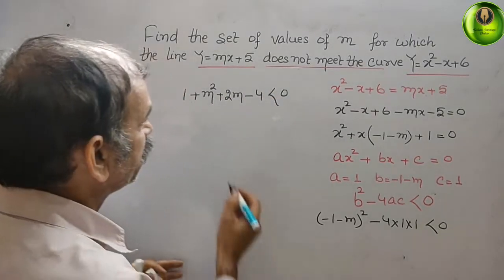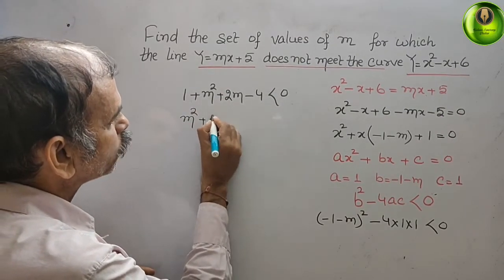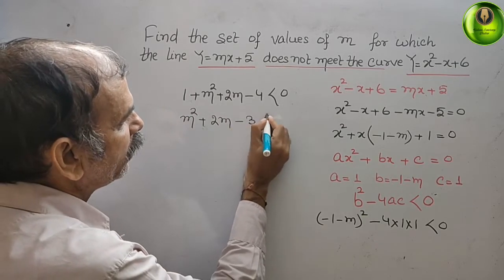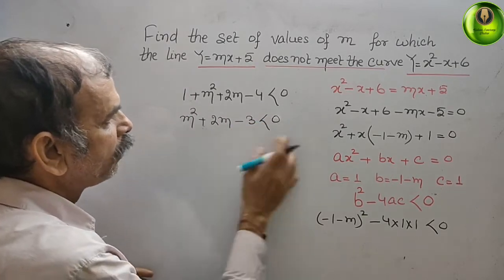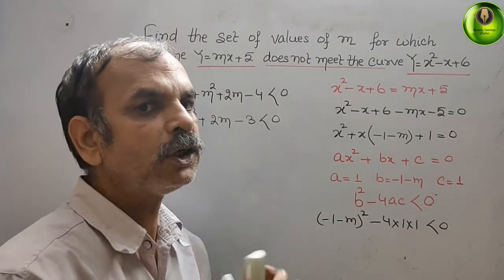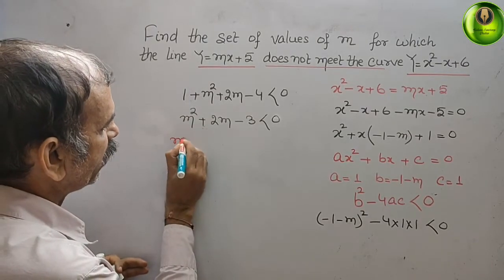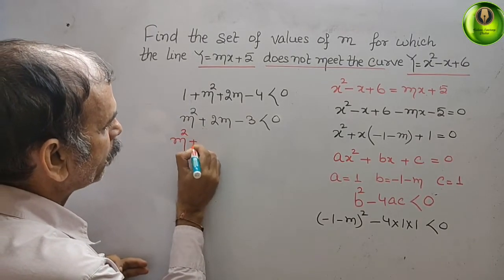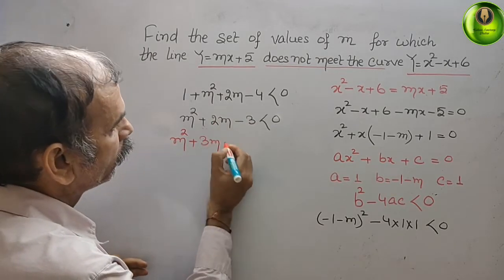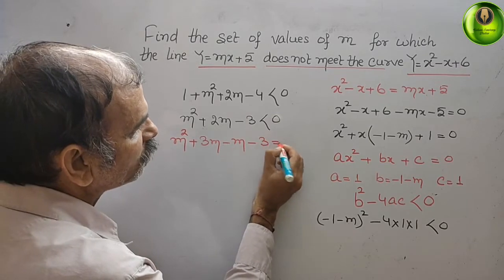Solving this, you will get m² + 2m - 3 < 0. Now solve this by setting it equal to 0. The expression is m² + 3m - m - 3 = 0.